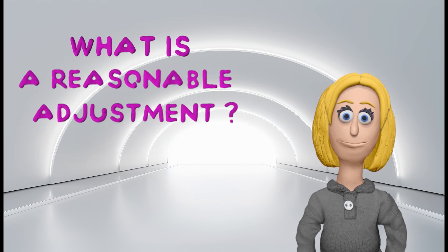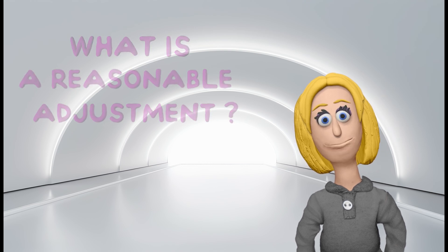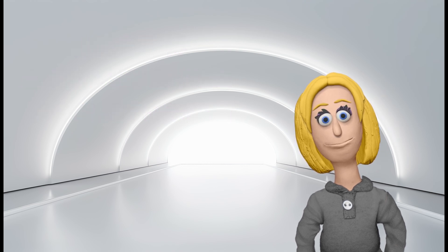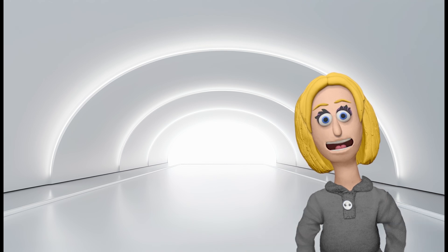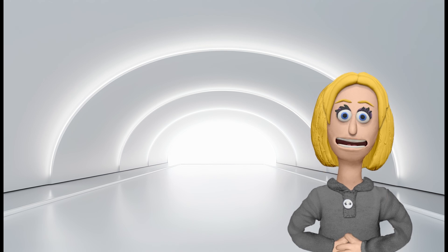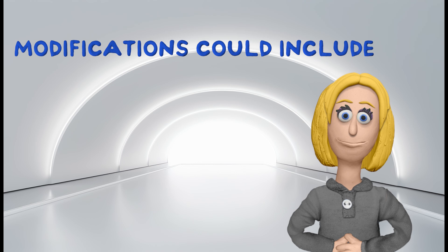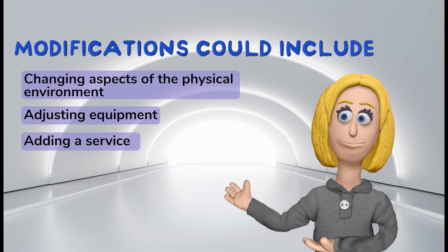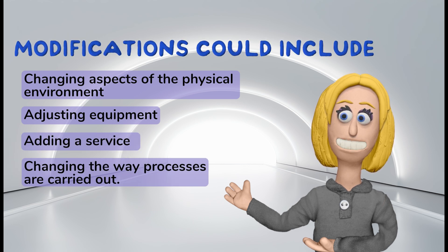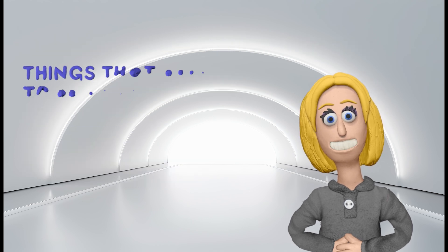A reasonable adjustment is a change a workplace makes to remove or reduce a disadvantage related to the employee's disability or a job applicant's disability. What is considered reasonable will depend on individual circumstances. The modifications could include changing aspects of the physical environment, adjusting equipment, adding a service or changing the way processes are carried out. There are things that need to be considered about the adjustment.